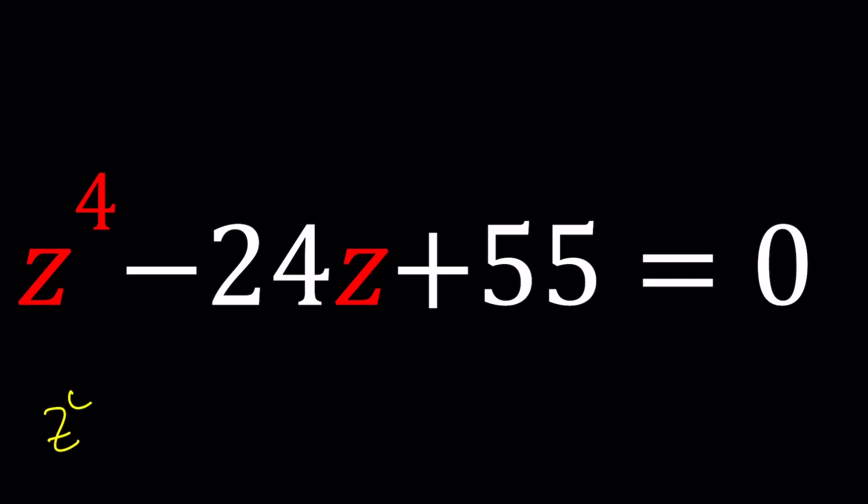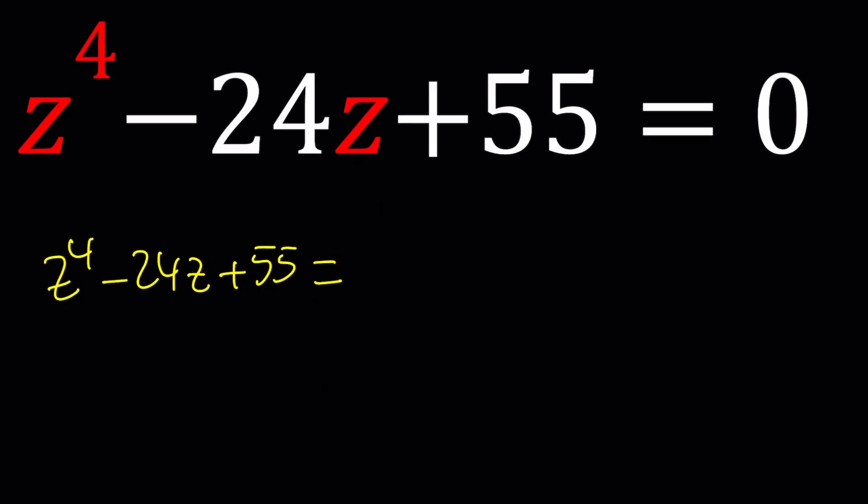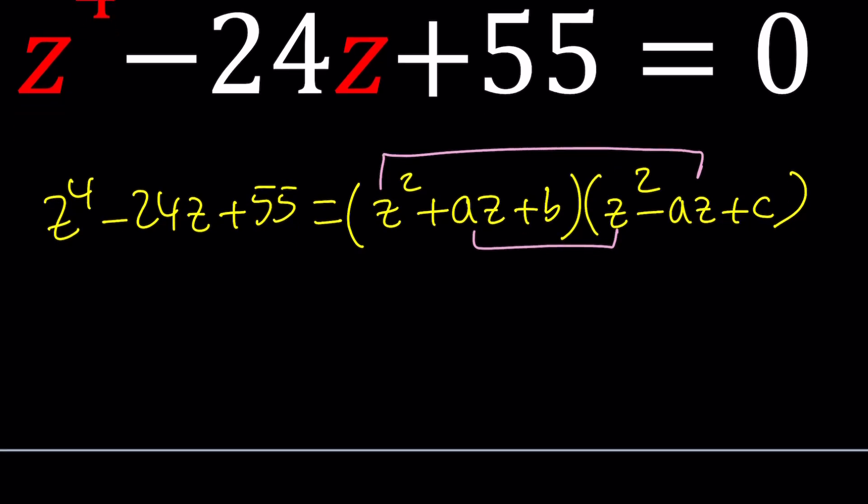Start with z to the fourth minus 24z plus 55, and at this point, if you have any suggestions or if you have any guesses, you can go ahead and do so. But I think it will be hard to guess. So I'm going to assume that this equation can be factored as z squared plus az plus b and z squared minus az plus c. Now, why did I use plus az and minus az? Because I'm missing z cubed. And this is a good way to get rid of it. When you multiply these, z cubed is going to cancel out automatically.